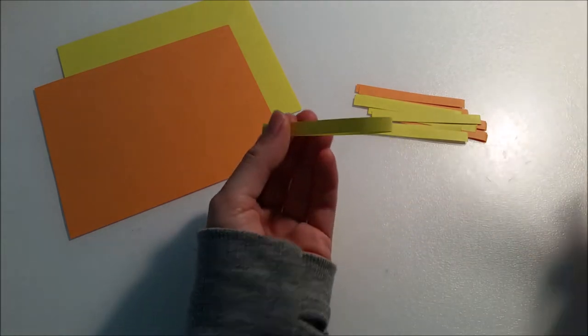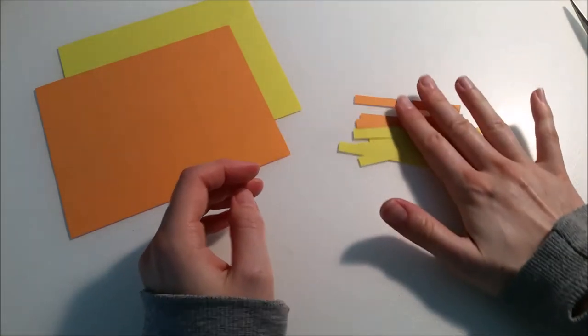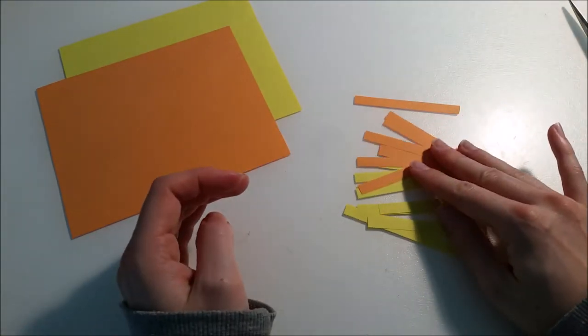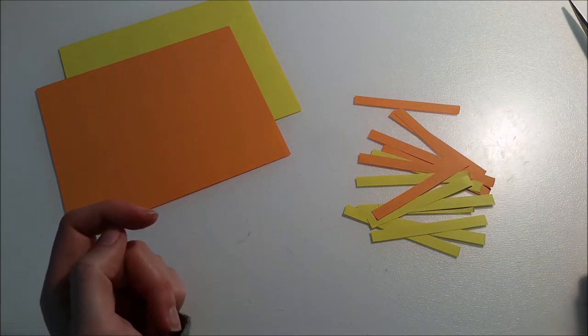So that means out of one stripe you will get two photo corners and now I have enough stripes for about 16 photo corners which will cover four photos.